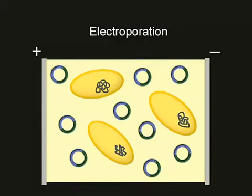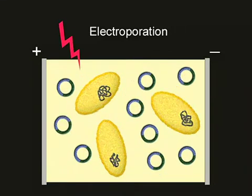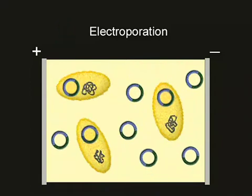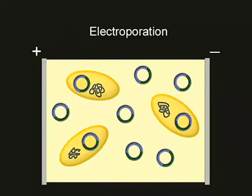We shock the bacterial cells at high voltage, and the electric current creates holes in the cell membranes. These holes are large enough for foreign DNA to pass through, and we end up with bacterial cells carrying the DNA that we want to sequence.